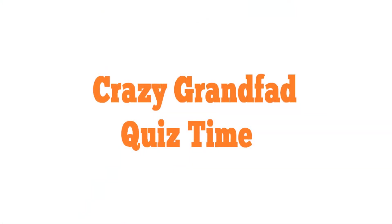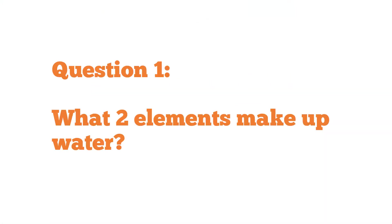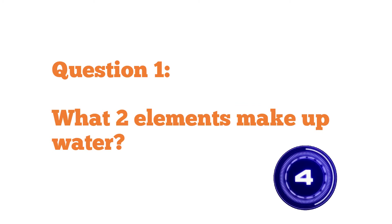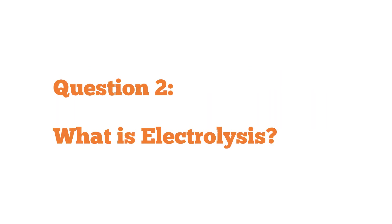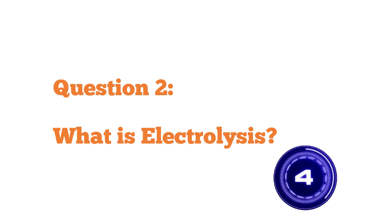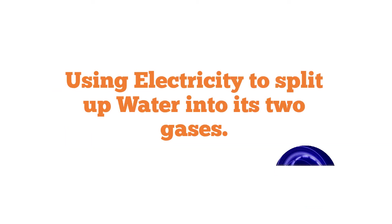It's Crazy Granddad quiz time. Question one: What two elements make up water? Hydrogen and oxygen. Two lots of hydrogen to one lot of oxygen. Question two: What is electrolysis? That's using electricity to split up the water into its two gases.